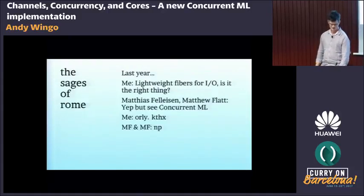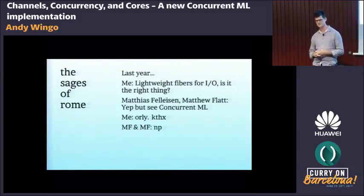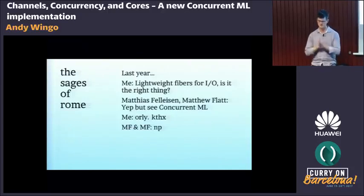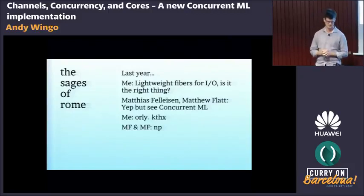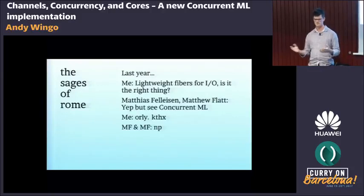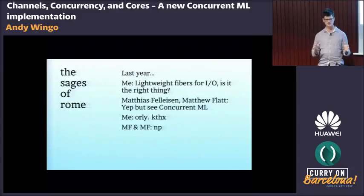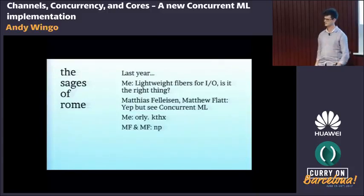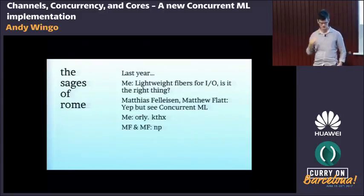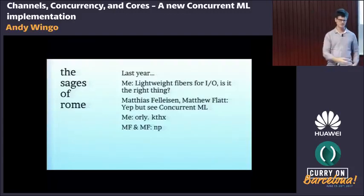I was very lucky at last Curry On because Matthias Felleisen and Matthew Flatt were there — my people, from the Scheme/lambda tribe. I came up to them and asked: am I doing the right thing? Is this the right abstraction? They said yes, this is what we'd tell you to use in Racket — use Racket threads — but additionally you need to look at Concurrent ML. I had never heard about it before. They said yep, you need to look at CML. So I read up about it.